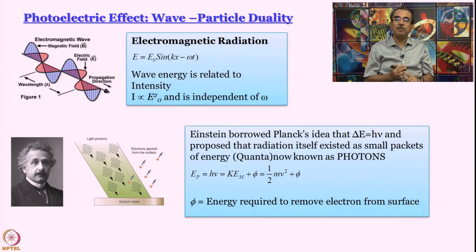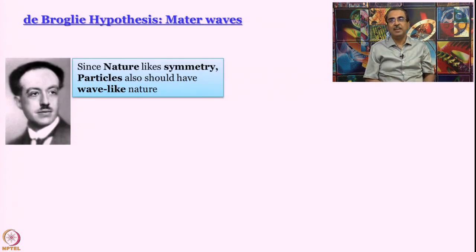So where are we now? Bohr model, the problem is it is too deterministic, uncertainty principle is violated, that is one side of the story. The other side of the story is that for light, this wave particle duality had been established already. At this point of time, in came de Broglie, who was at that time a PhD student.